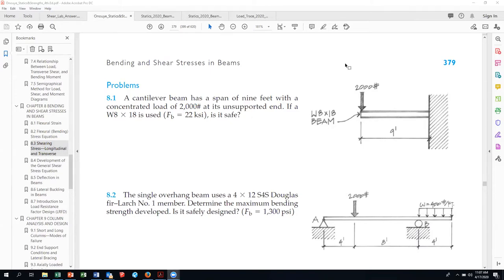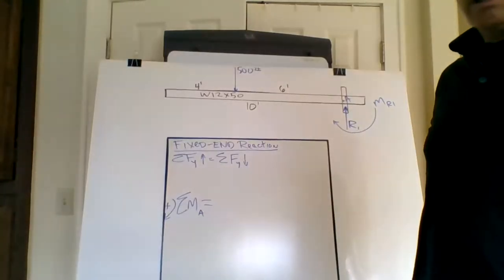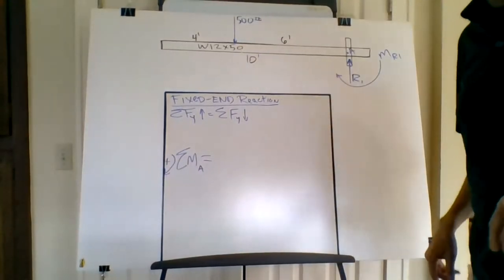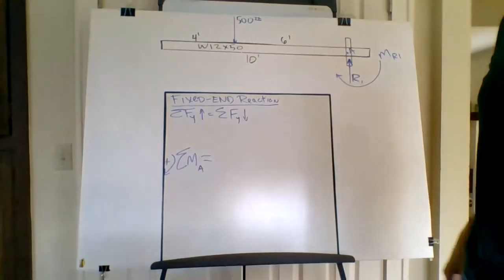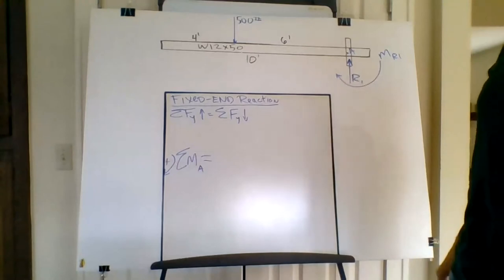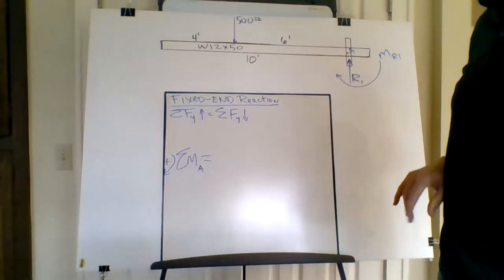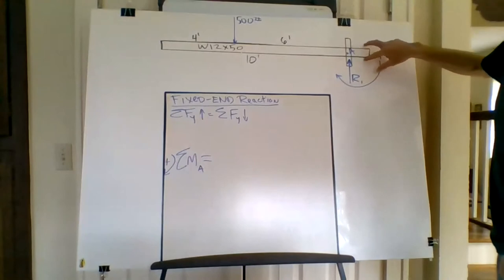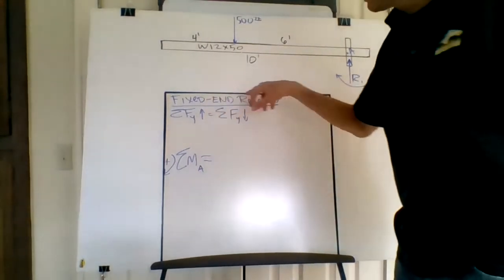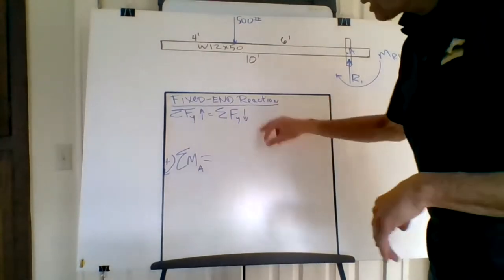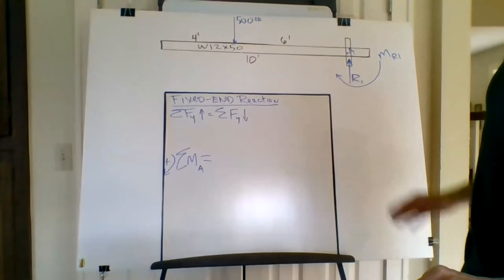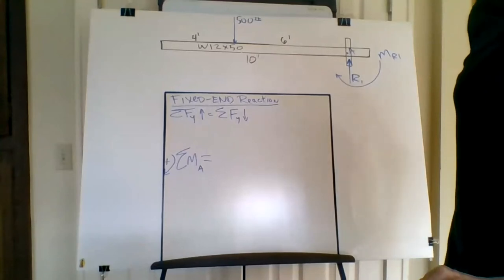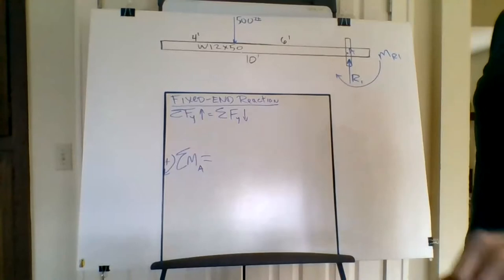Let's go to share screen — I've got the whiteboard all ready. Here's the beam. It's a ten-foot-long span — actually longer because it's socketed into the wall, and it is a fixed end reaction. This will be another good example on getting the reactions and the moment, and then we're going to generate a shear moment diagram.